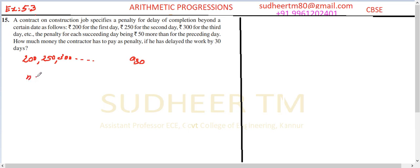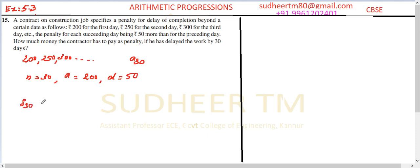Here n is equal to 30, first term a is equal to 200, common difference d is equal to 50, and S₃₀ is what is asked.